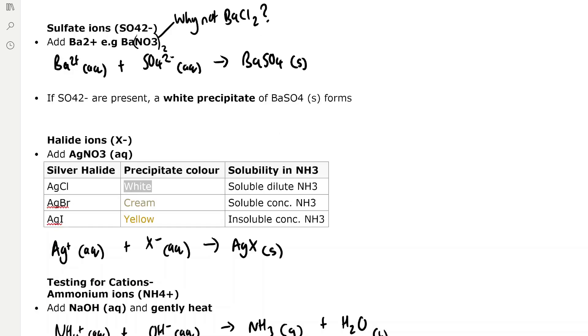To test for sulfate ions or SO4 2 minus we need to add barium 2 plus ions which we can gain from barium nitrate. Consider why we might not add barium chloride. The ionic equation for this reaction is barium 2 plus plus SO4 2 minus forms barium sulfate which is a solid white precipitate and that is the positive test for sulfate ions.